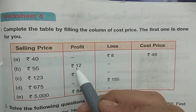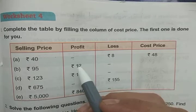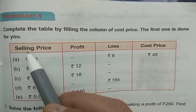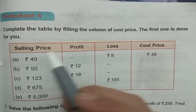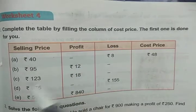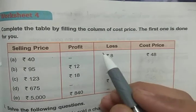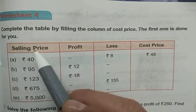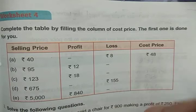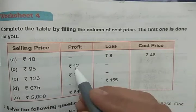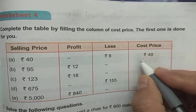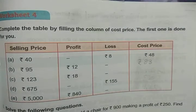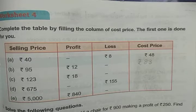In the case of profit, the selling price is higher, so the cost price will be less. That's why we subtract profit from the selling price to find the cost price. In the case of loss, the cost price is higher, so we add the loss to the selling price to get the cost price. So 95 minus 12 gives rupees 83.